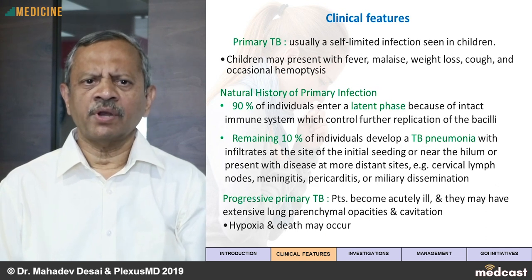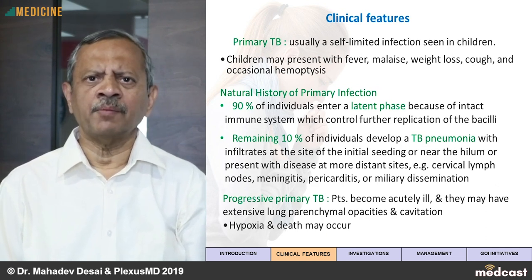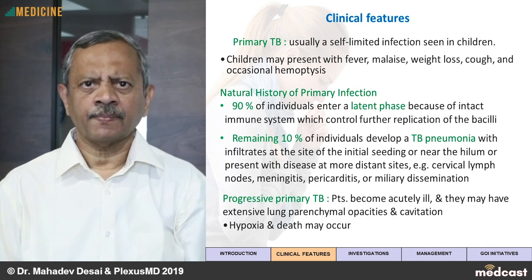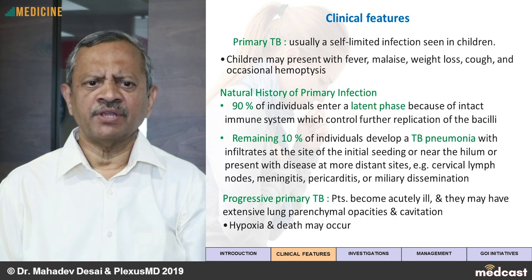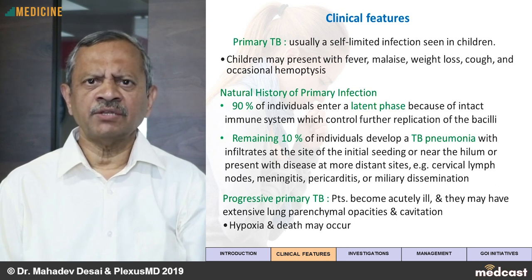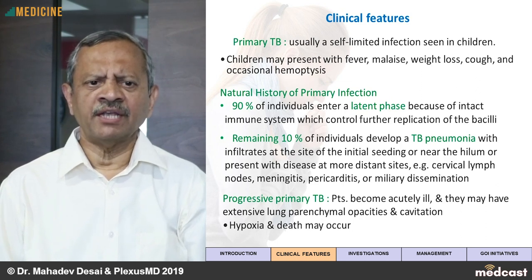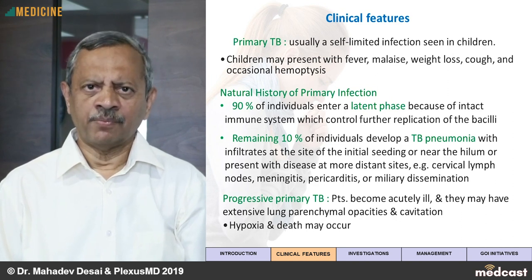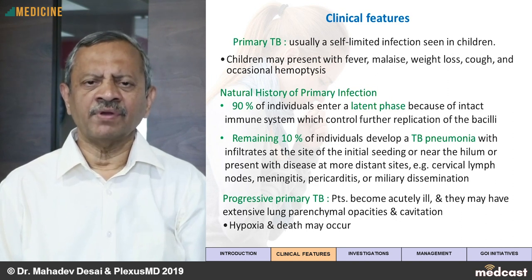Progressive primary tuberculosis is the extension of primary tuberculosis because of a weaker immune system. The patient becomes acutely ill and may have extensive lung involvement as well as other systems involvement, and a child may develop hypoxia or even death.